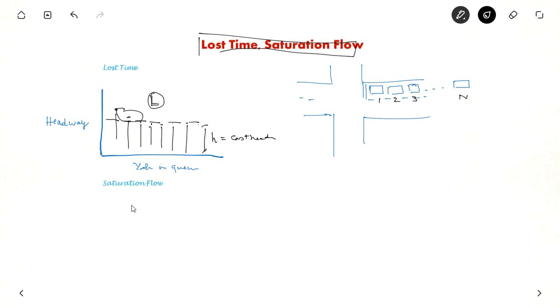Saturation flow is nothing but the highest amount of flow possible. So saturation flow is inverse of headway. Saturation flow equal to 1 by headway. If headway is in seconds and you need saturation flow in vehicles per hour, so it is 3600 by H, vehicle per hour.